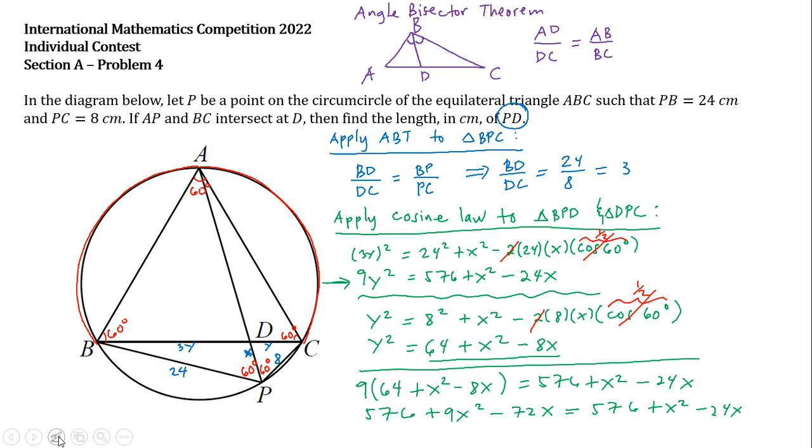But we can just cancel 576. And then let's combine like terms. So we will have 8X squared and then minus 48X equals 0.